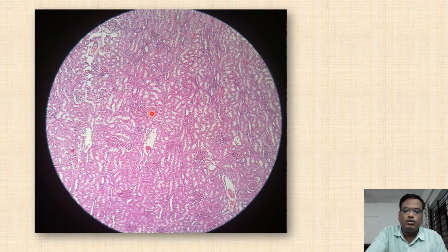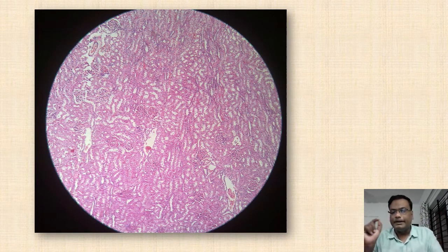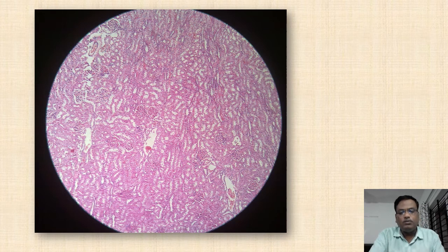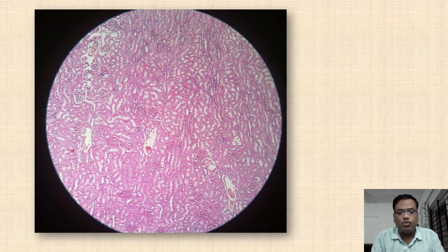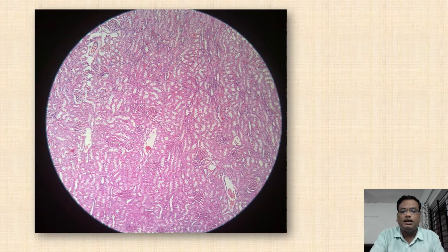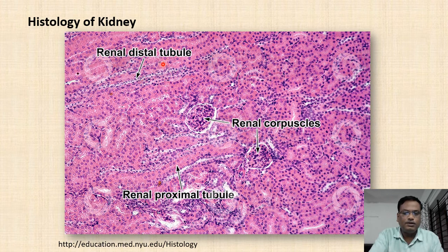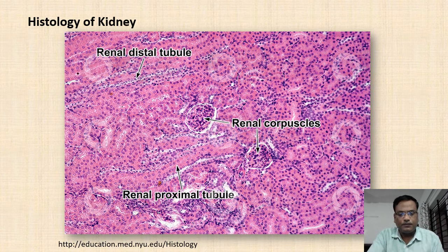Each renal corpuscle represents one nephron. The other structures visible in the section are ducts — they may be proximal convoluted tubules or distal convoluted tubules. We can differentiate proximal and distal convoluted tubules based on the type of epithelial cells bordering the tubule. The cortex part of the kidney thus shows renal corpuscles along with the proximal and distal tubules.